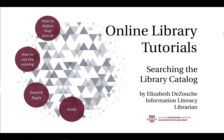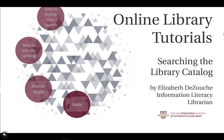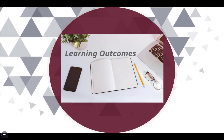Here are the learning outcomes or goals for this tutorial. After watching this tutorial, you will be able to understand how information systems like the library catalog are organized in order to access relevant information. You will be able to design and refine your needs and your search strategies as necessary based on search results, and you will understand that first attempts at searching do not always produce adequate results.